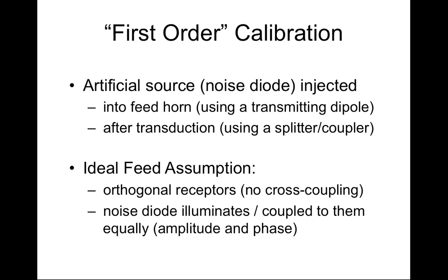You can also put the signals through a quarter-wave plate to convert your basis. You can do this either with a transmitter that injects into your feed horn, or you could couple your signal to the wires immediately after your receiver. After transduction — the conversion from a free-space electromagnetic wave to a voltage on a wire — you can couple in a signal that should be equal and in-phase in both wires if it goes through a splitter and a pair of couplers.